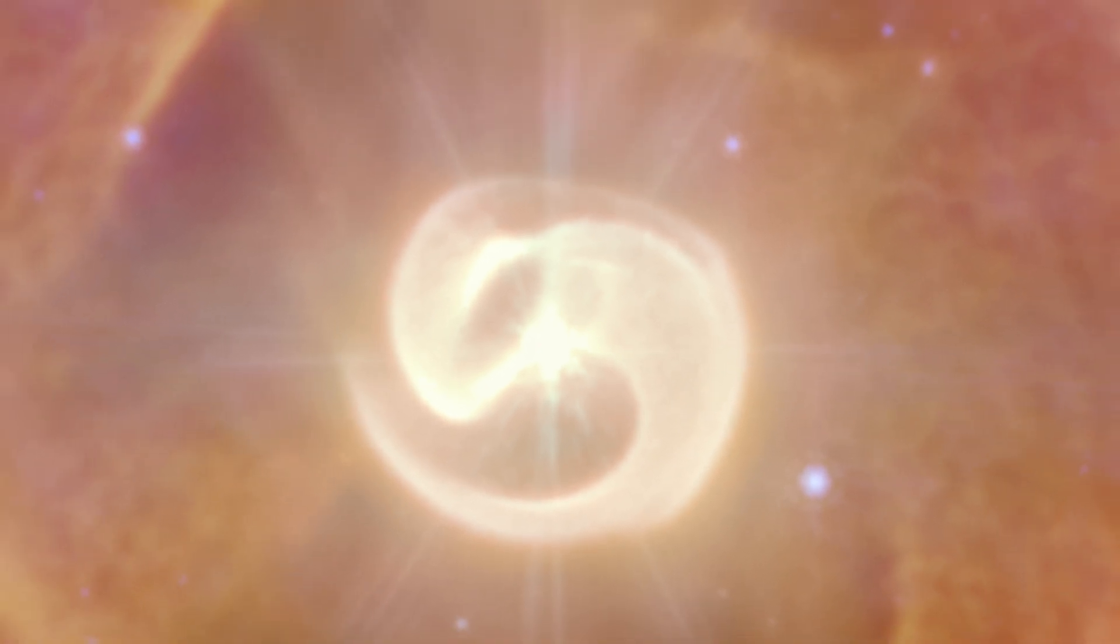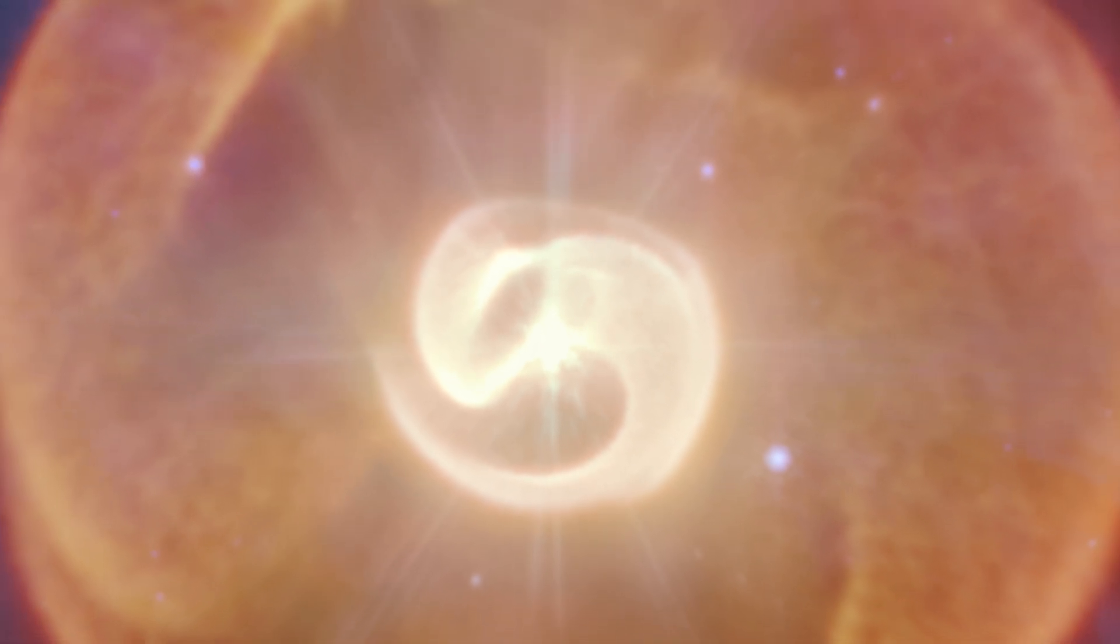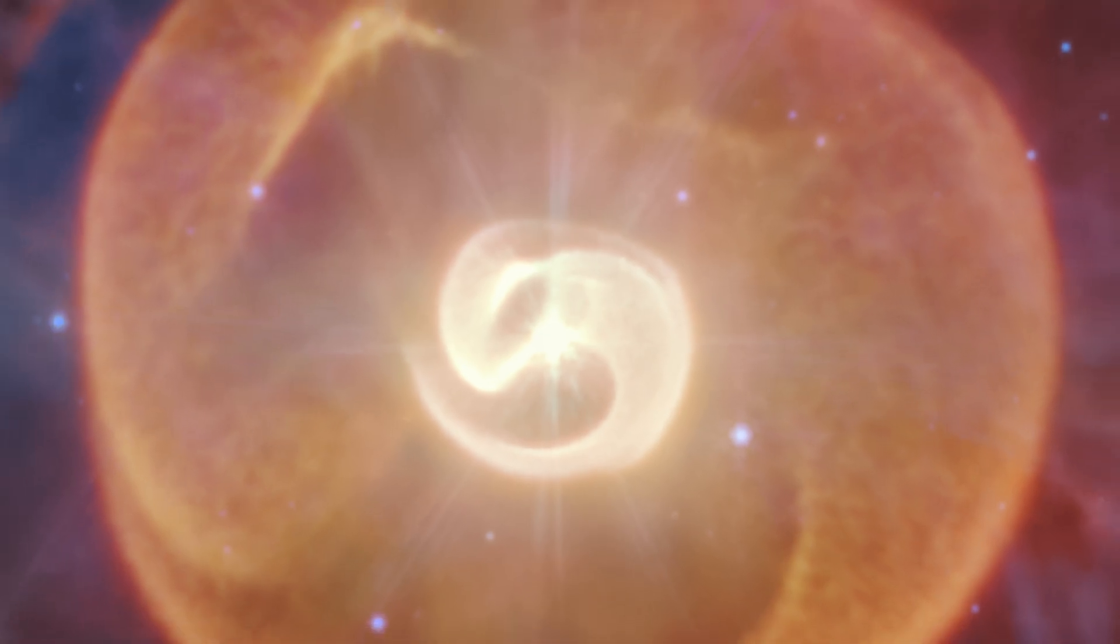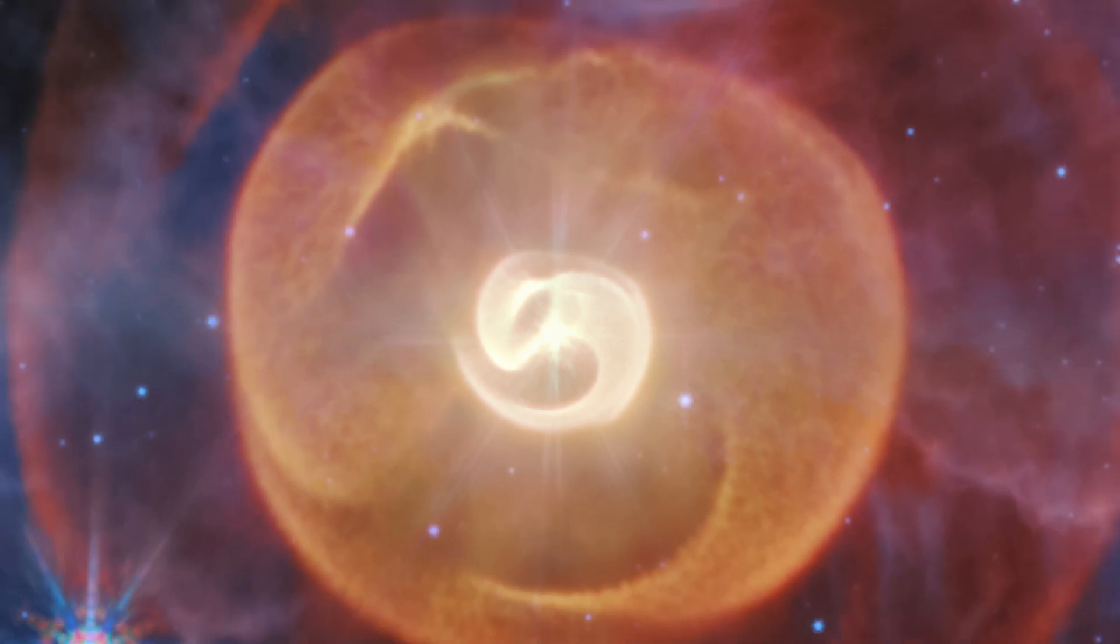Unfortunately, JWST just shows these three stars as a single bright point of light in the image, at the center of it all. Even Webb can't resolve the individual stars, they're just too small from its point of view.